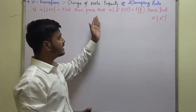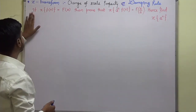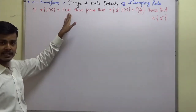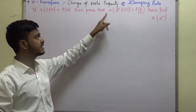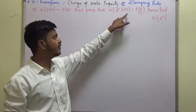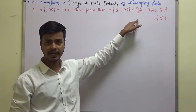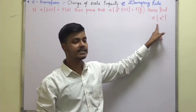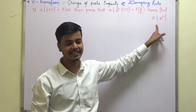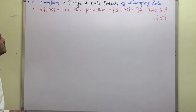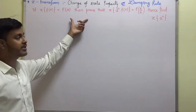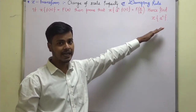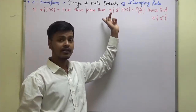Now let us see what this property says. This property says: if the Z-transform of f(n) is F(z), then prove that the Z-transform of a^n · f(n) is equal to F(z/a). The second part says: find the Z-transform of a^n. So first we will concentrate on this property and then we will find Z{a^n} with the use of the change of scale property.